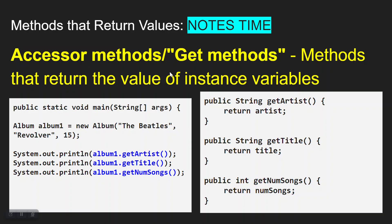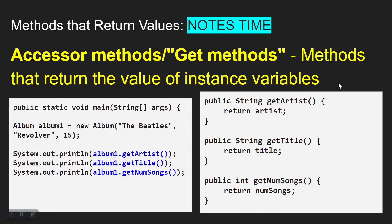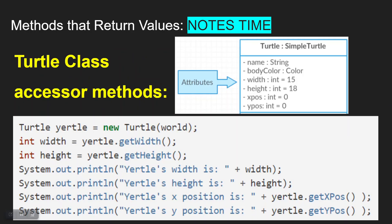Accessor methods, or get methods, return the values of your instance variables. Using the Album class example — if I instantiate an object of the Album class, I can call 'getArtist', 'getTitle', and 'getNumSongs' inside print statements. 'getArtist' simply returns the artist, 'getTitle' returns the title, and 'getNumSongs' returns the integer containing the number of songs. Get methods, or accessor methods, are return methods.